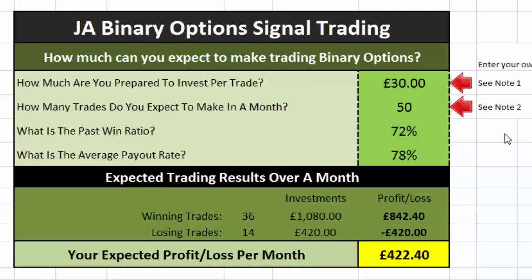So I've said let's say an average of 50 trades. What's the past win ratio? This is the figure given by John Anthony's website — as I'm recording this video, over 3,700 trades, 72% have been winners. What's the average payout rate? Depends on your broker, but normally you're looking between 77 and 80%. So I've gone towards the low end at 78% — it's not going to make a huge difference between 78 and 79, but leave that at 78.